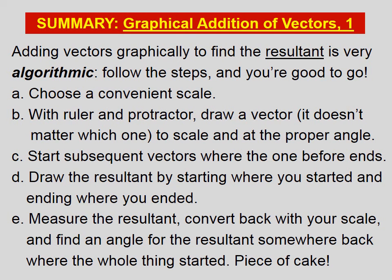Let's summarize graphical addition of vectors. Adding vectors graphically to find the resultant is very algorithmic. Follow the steps and you're good to go. First, choose a convenient scale. Then, with ruler and protractor, draw a vector, it doesn't matter which one, to scale and at the proper angle. Start subsequent vectors where the one before ends. Draw the resultant by starting where you started and ending where you ended. And finally, measure the resultant, convert back with your scale, and find an angle for the resultant somewhere back where the whole thing started.